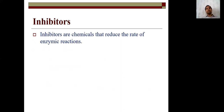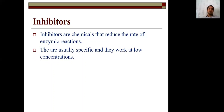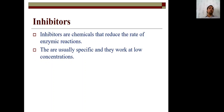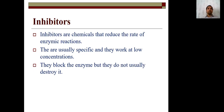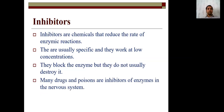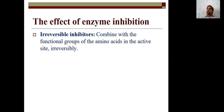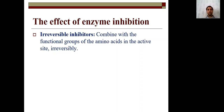Inhibitors are chemicals that reduce the rate of enzyme reactions. They are usually specific and work at low concentrations. They block the enzyme but do not usually destroy it. Many drugs and poisons are inhibitors of enzymes in the nervous system. Inhibition is of two types: irreversible inhibition and reversible inhibition. In irreversible inhibition, once the inhibitors bind with the enzymes, the enzyme cannot be reactivated. They combine with functional groups of amino acids at the active sites irreversibly.